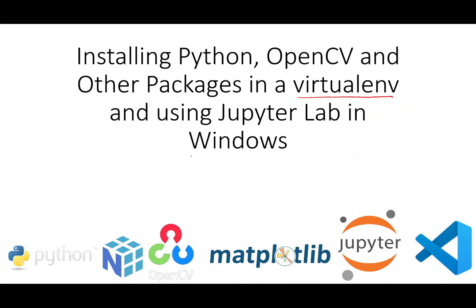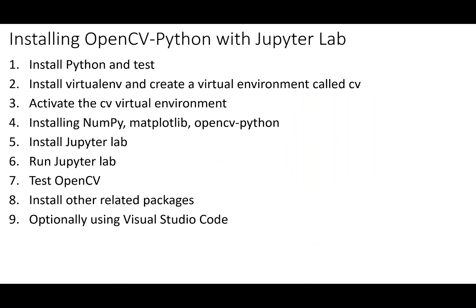So today we are specifically talking about installing them in Windows. The plan is like this: let's first install Python and test it, then install the virtualenv package and create a virtual environment called 'cv' for our computer vision work and activate this cv virtual environment. You must activate it before you install other packages, otherwise these packages will go to the main Python folders scripts folder.